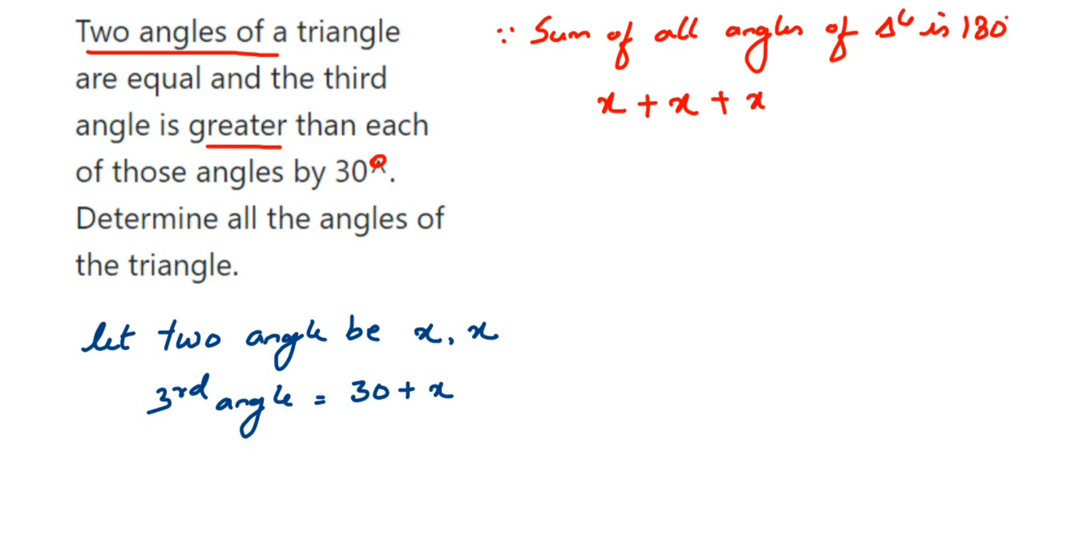Now add all the variables. x plus x plus x will be 3x, so 3x plus 30 equals 180 degrees. Transpose 30 to the other side, so 3x equals 180 degrees minus 30.